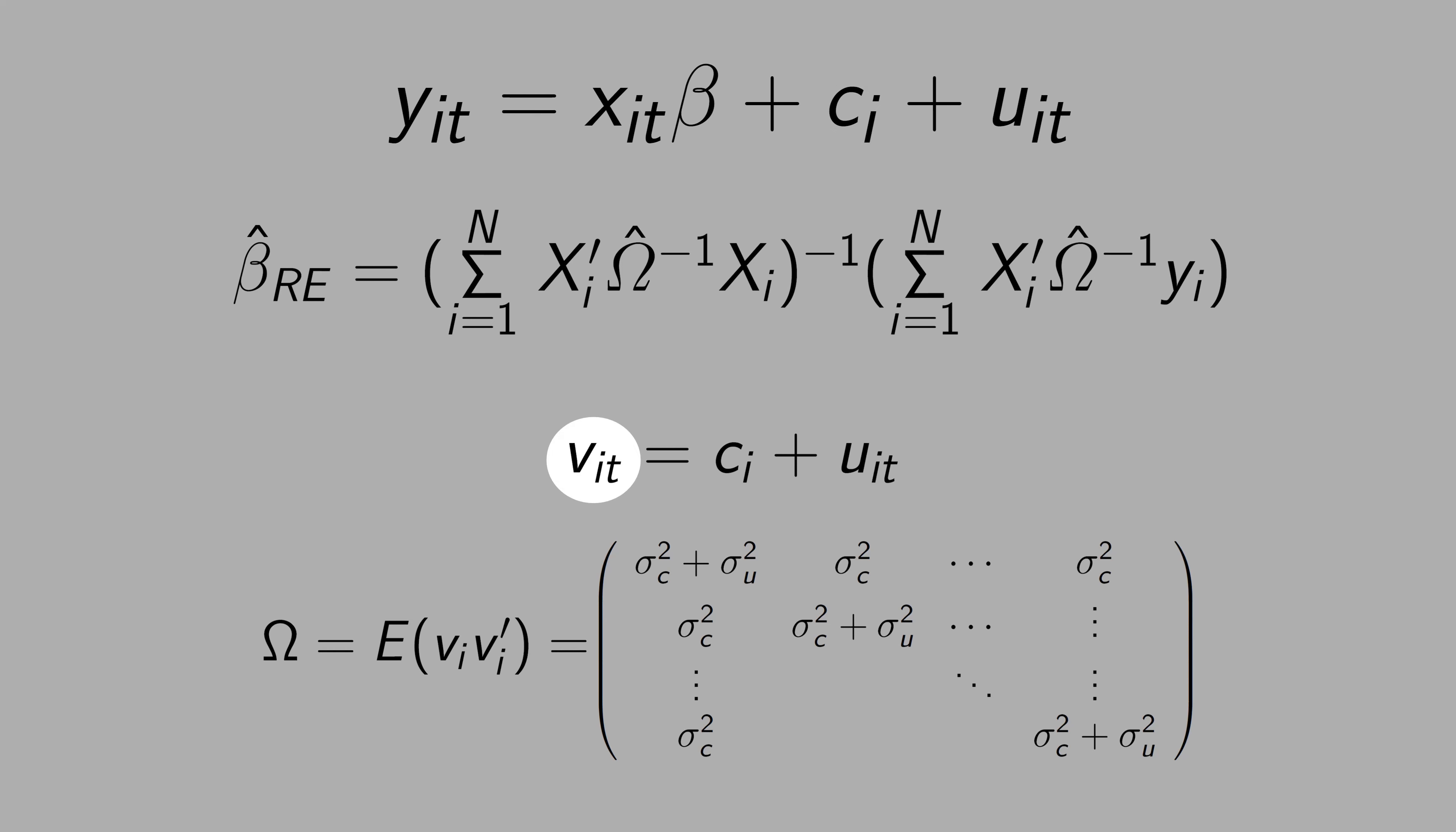Then the error term, vit, will be composed by ci and the uit, the original error term. See that omega is the covariance matrix, and the inverse of omega shows up here and here.